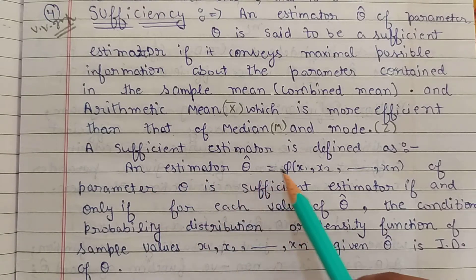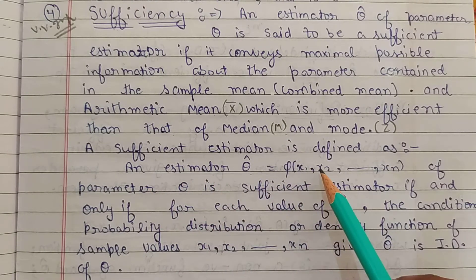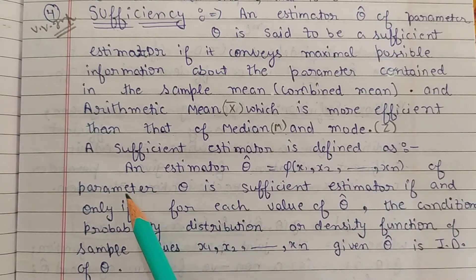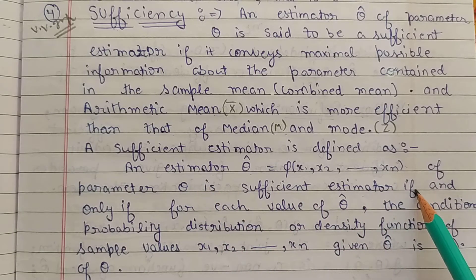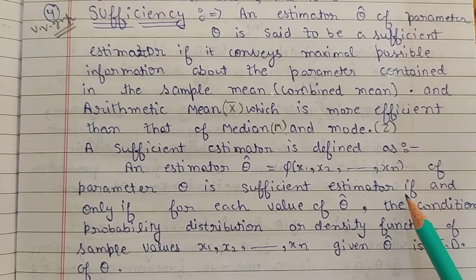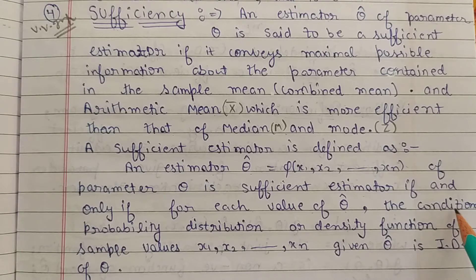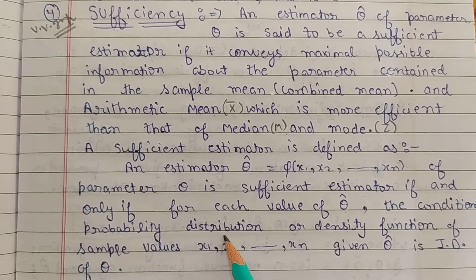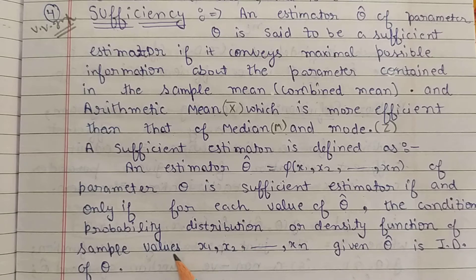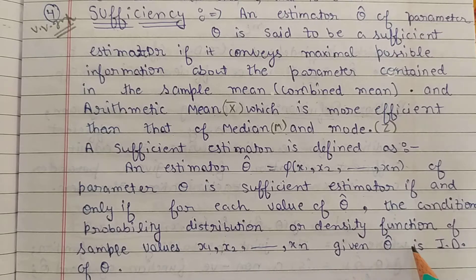An estimator theta cap equal to phi of x1, x2, ..., xn of a parameter theta is a sufficient estimator if and only if, for each value of theta cap, the conditional probability distribution or density function of sample values x1, x2, ..., xn given theta cap is independent of theta.